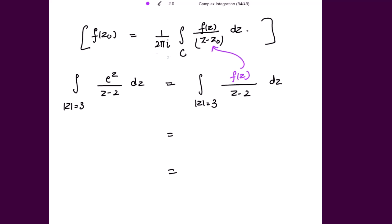Just take 2πi to the other side, you get this as 2πi times f(z_0) where z_0 is 2.